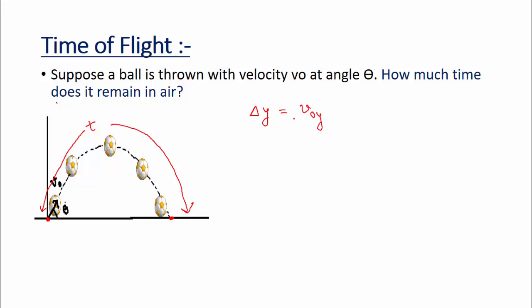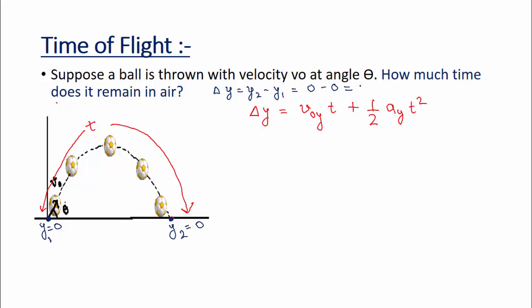We use delta y equals v₀y·t plus half·ay·t² for vertical motion. For displacement we use vertical displacement, for initial velocity the vertical component, and for acceleration the vertical acceleration. Delta y equals y₂ minus y₁. At the initial position the height is 0, and at the final point the ball is again at the ground so height is also 0. Therefore delta y equals 0.